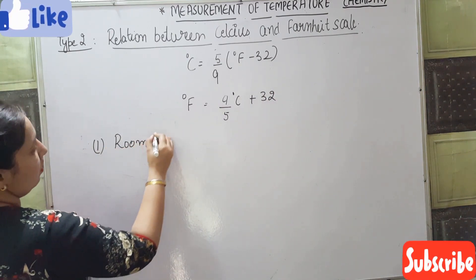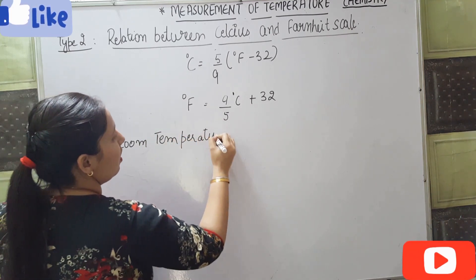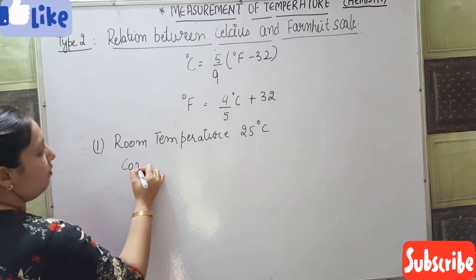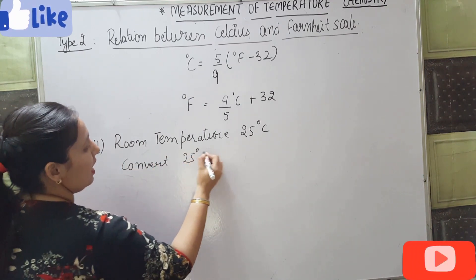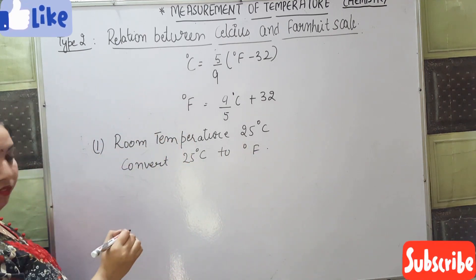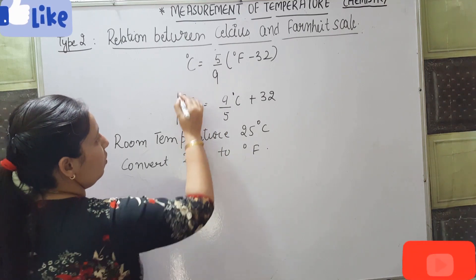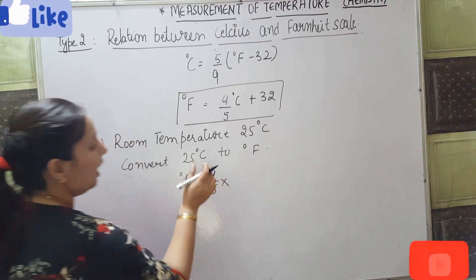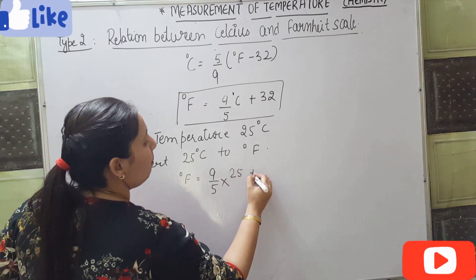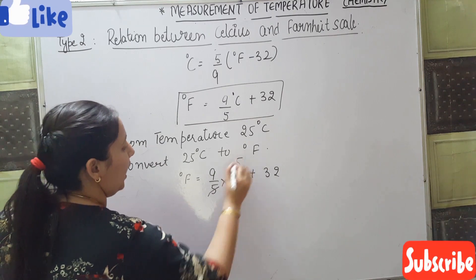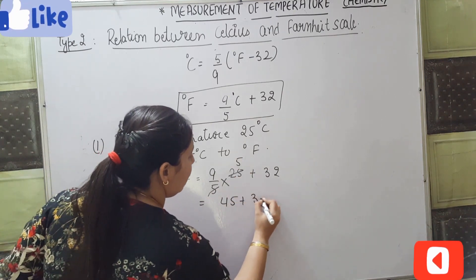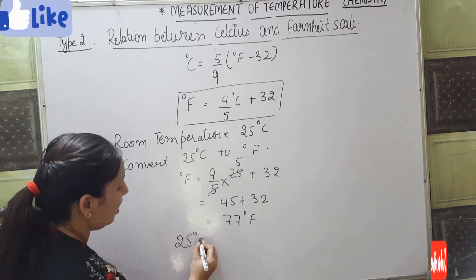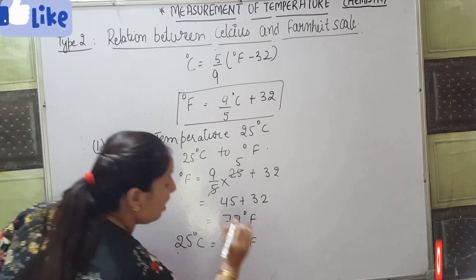Room temperature is 25 degree Celsius. We have to convert this to Fahrenheit scale. Substituting the values: degree Fahrenheit equals 9 by 5 into 25 plus 32. That is 45 plus 32, which equals 77 degree Fahrenheit. So room temperature in Fahrenheit scale is 77 degree Fahrenheit.